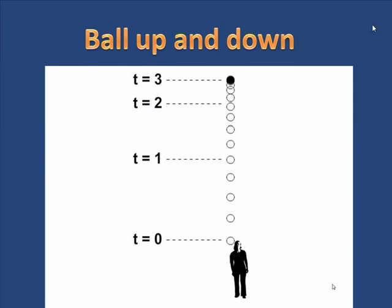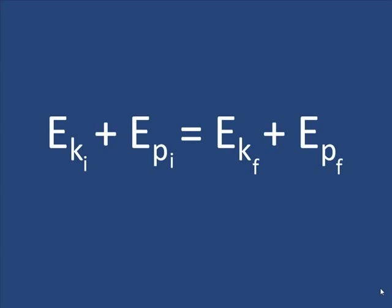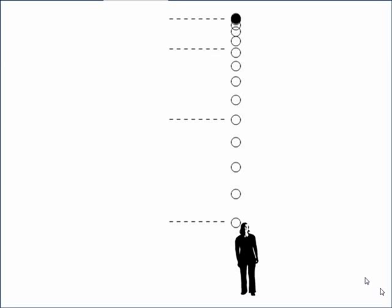And we can say, though, the total energy is always constant. The kinetic plus the potential will give a constant number. We can write the kinetic initial plus the potential initial will equal the kinetic final plus the potential final.